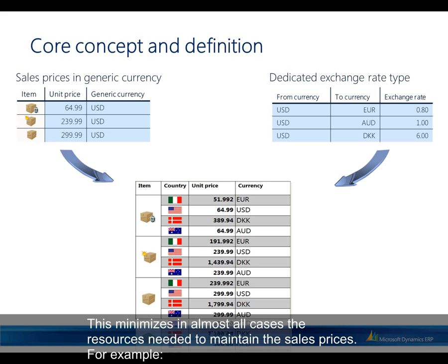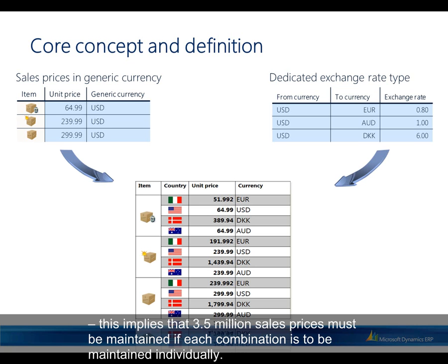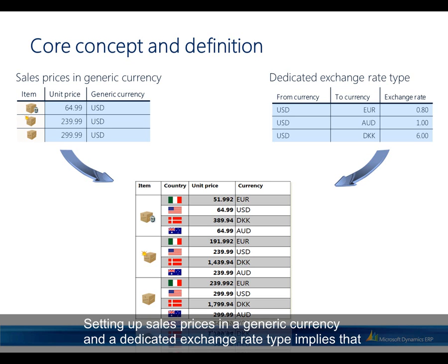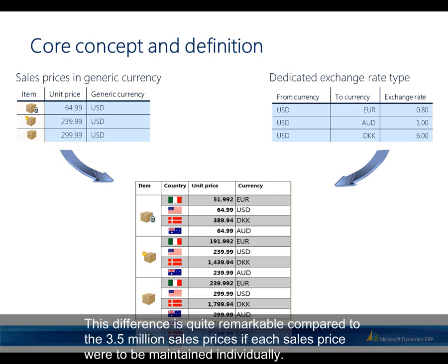For example, a company with 50,000 products each sold in 70 currencies would require 3.5 million sales prices if each combination were maintained individually. Setting up sales prices in a generic currency with a dedicated exchange rate type means only 50,000 sales prices and 69 exchange rates must be maintained. This difference is quite remarkable compared to 3.5 million individual prices.